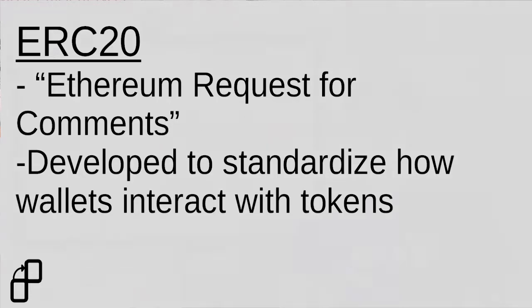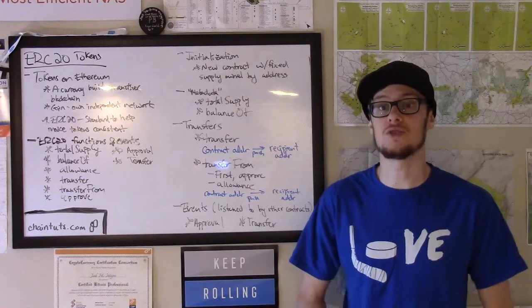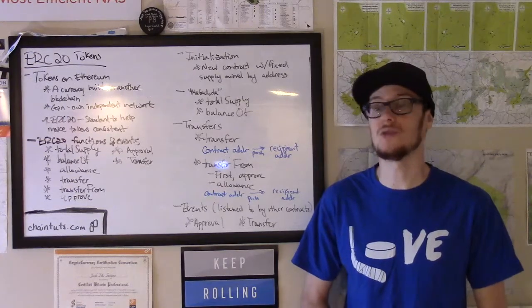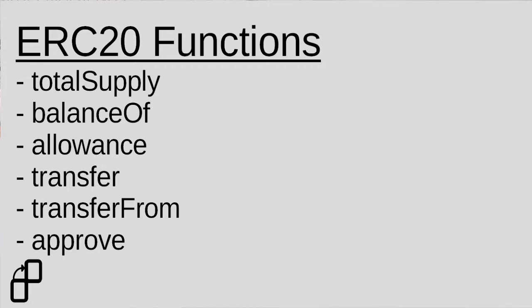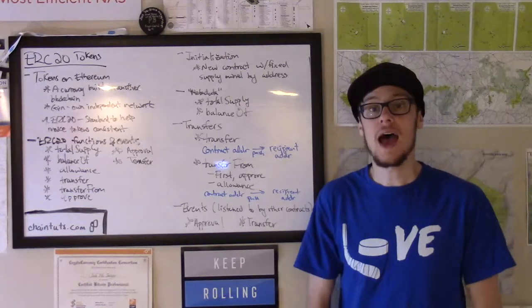So what are the functions and events that ERC20 token smart contracts use? Well, we have a couple of functions, starting with total supply, we have balance of, allowance, transfer, transfer from, and approve.